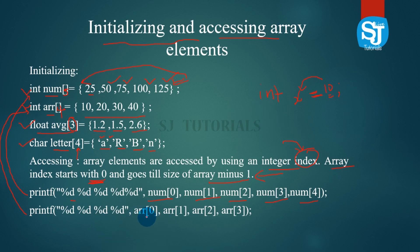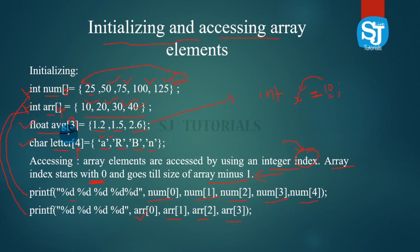If you want to see the array values: ARR at index 0 is 10, ARR at index 1 is 20, ARR at index 2 is 30, ARR at index 3 is 40. This is the initialization of the array.